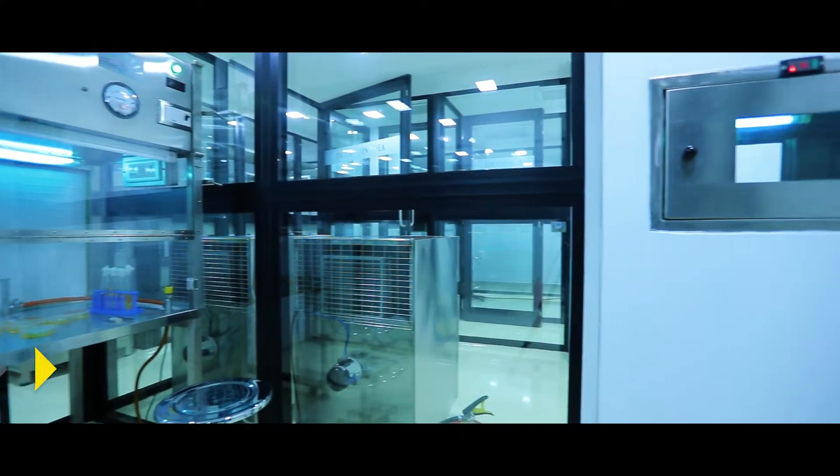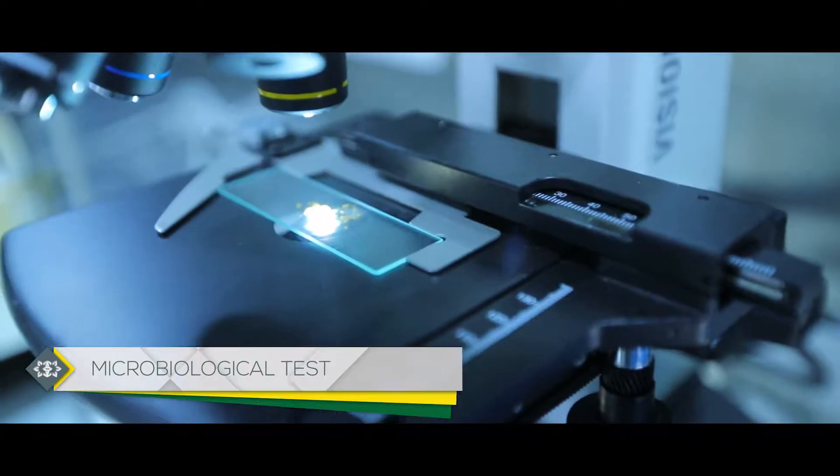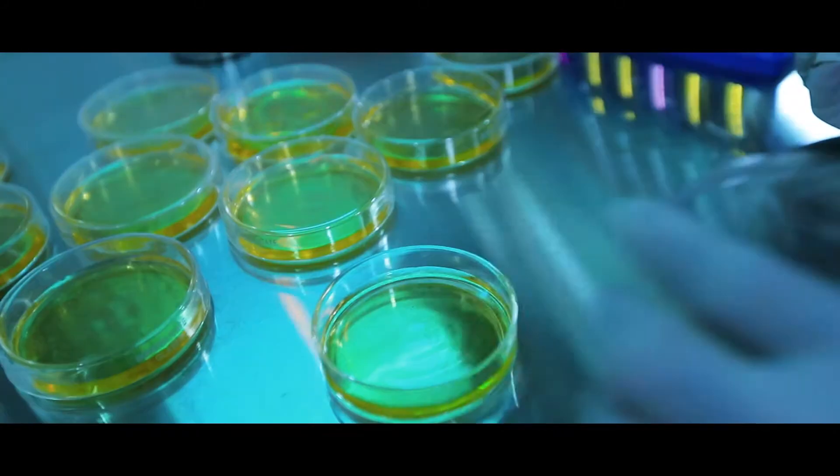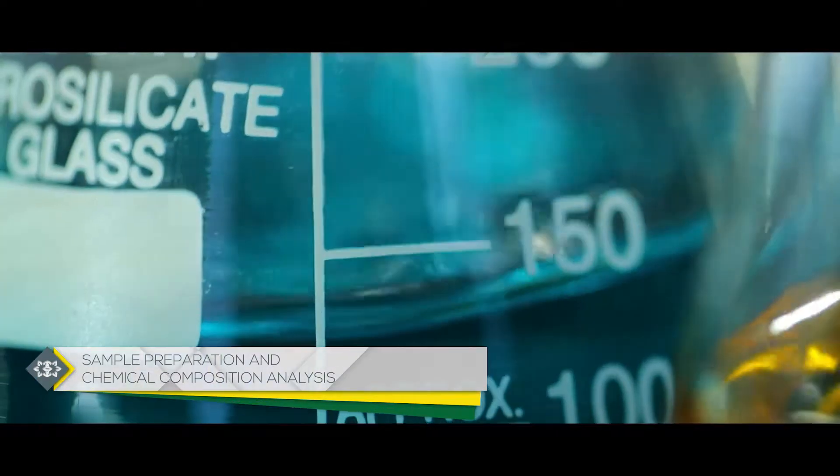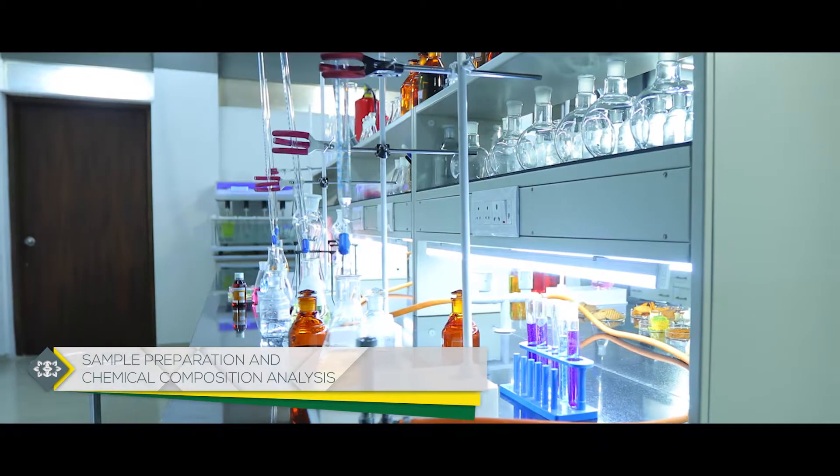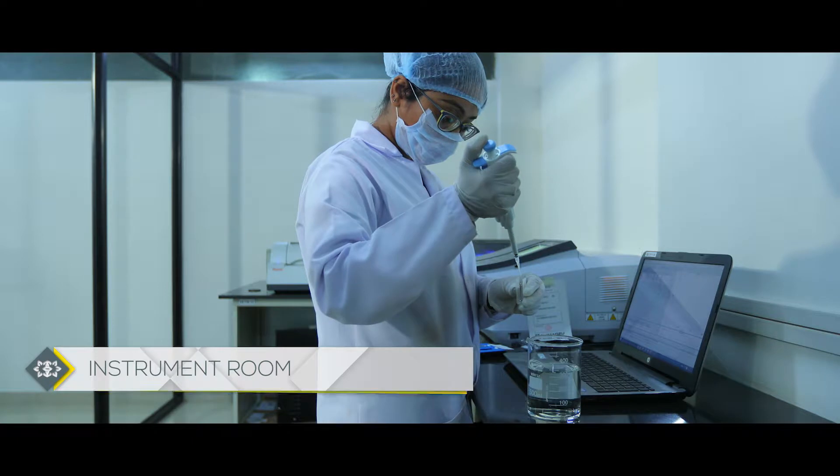Drug testing begins with microbiological testing of various kinds of bacterial, fungal, and other types of microorganisms, followed by sample preparation and chemical composition analysis in the chemical area, then on to the detailed investigations at the instrument room.